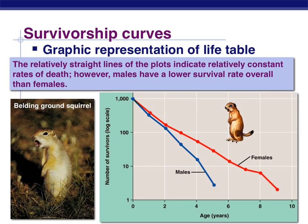We can take the same information from that table and put it into a graph. This type of graph — where we're talking specifically about the number of survivors of a species over a given amount of time — is called a survivorship curve. It represents how long animals will live based on known data. When the lines are relatively straight, it normally indicates that the rate of death is pretty constant. The males do have a lower survival rate overall than females — females live longer and more of them live, whereas males live for a shorter period of time and fewer of them survive.